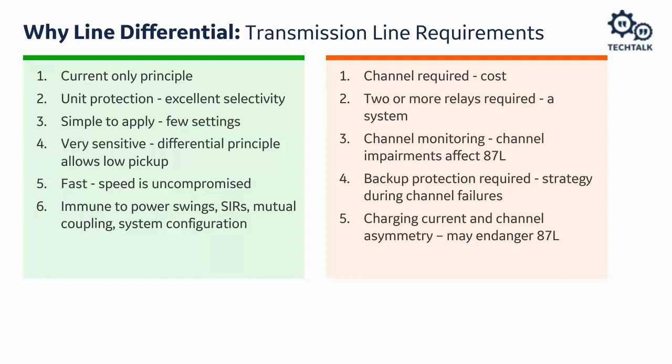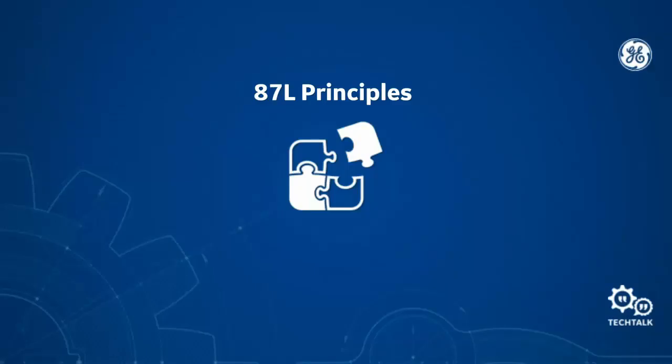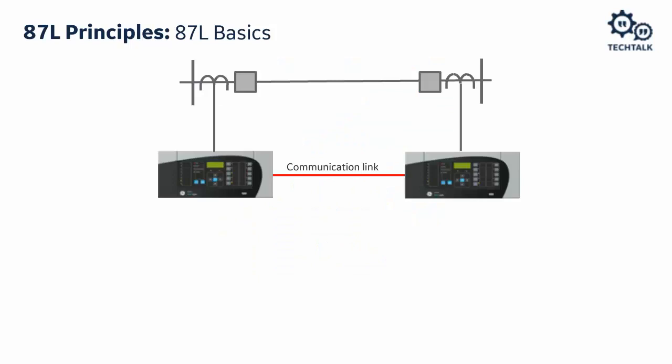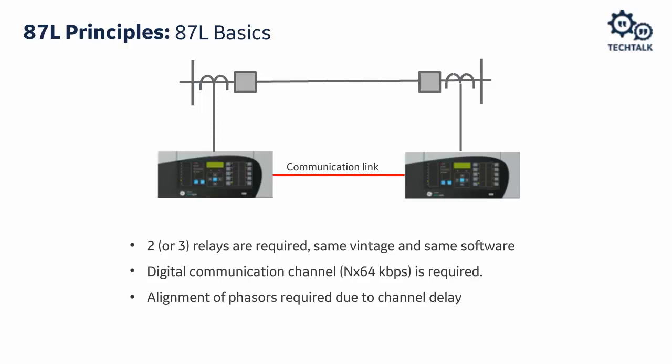The system has two relays connected with a communication link and CTs at both ends of the line — this makes our zone of 87L protection. We need two relays for a two-terminal line or three relays for a three-terminal line.